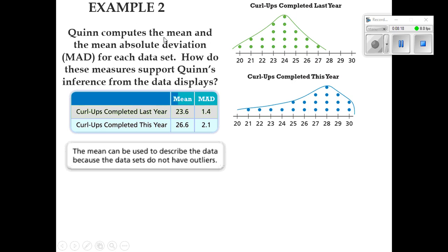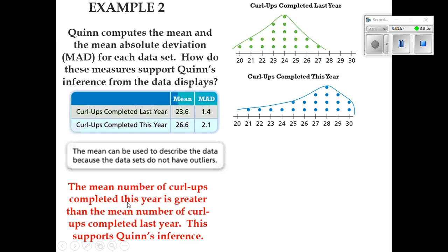So, example two, Quinn computes the means and the mean absolute deviation, which we'll call MAD, for each data set. How do these measures support Quinn's inference from the data display? Well, it says here the curl-ups completed last year. The means, in other words, the average was 23.6. But over here, the means was 26.6. The MAD, which they call the mean absolute deviation for the first year, was 1.4. The second year is 2.1. Well, the means number of curl-ups completed this year is greater than the means number of curl-ups completed from last year. This supports Quinn's inference.